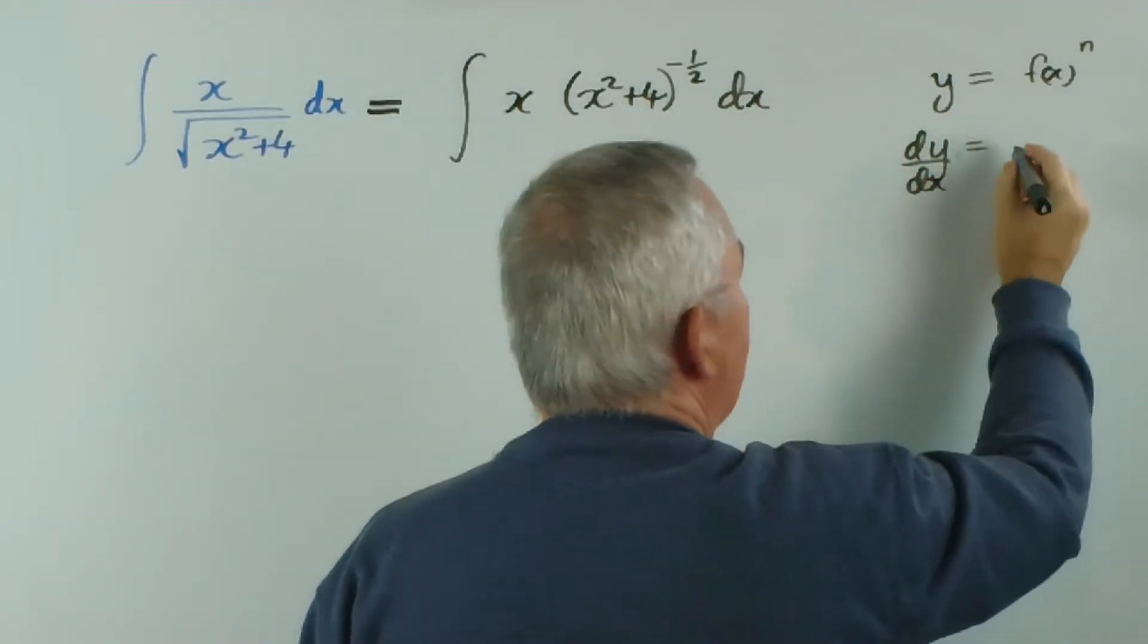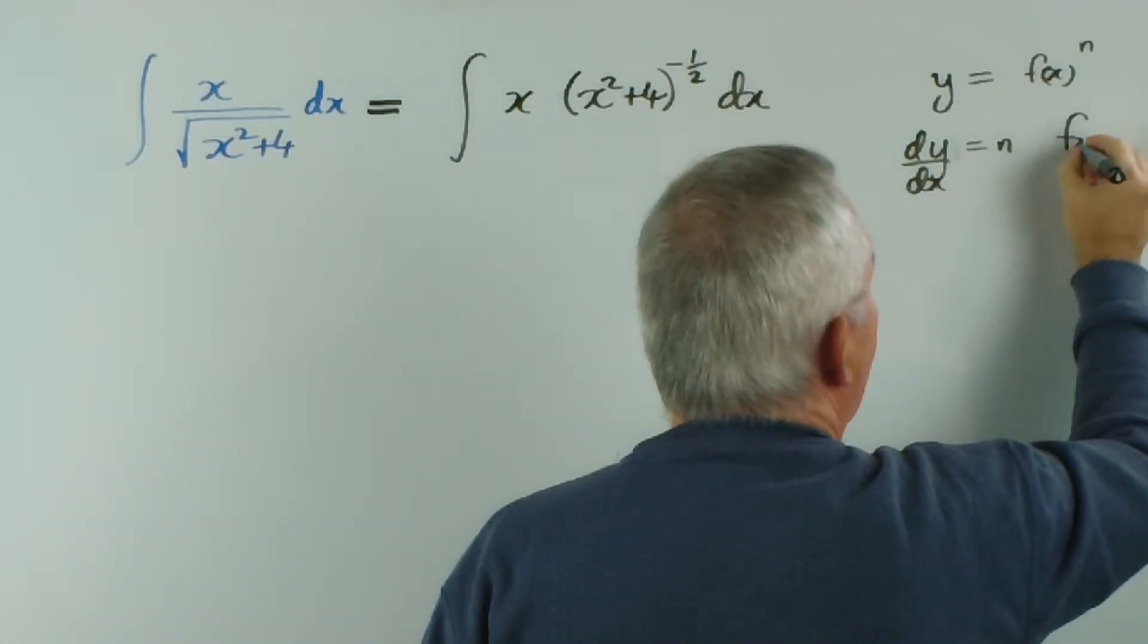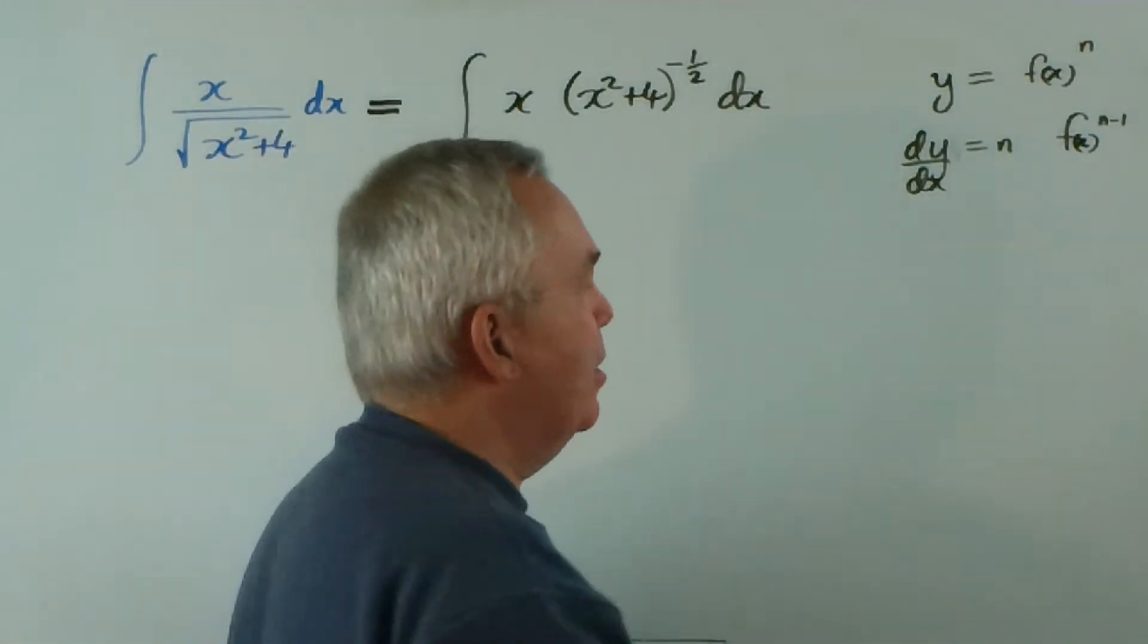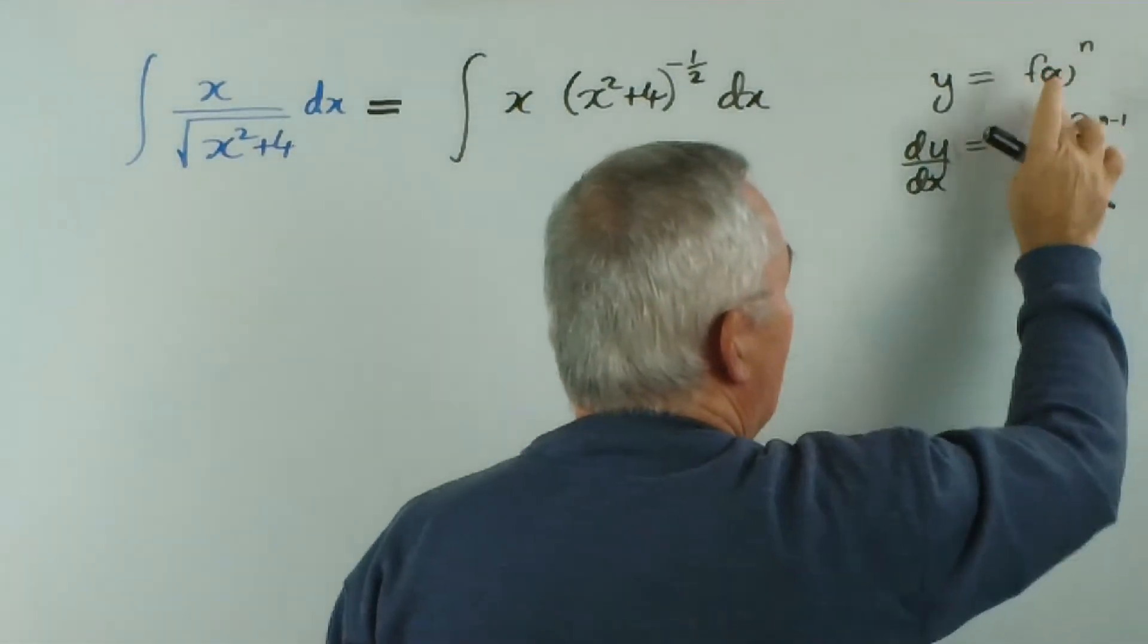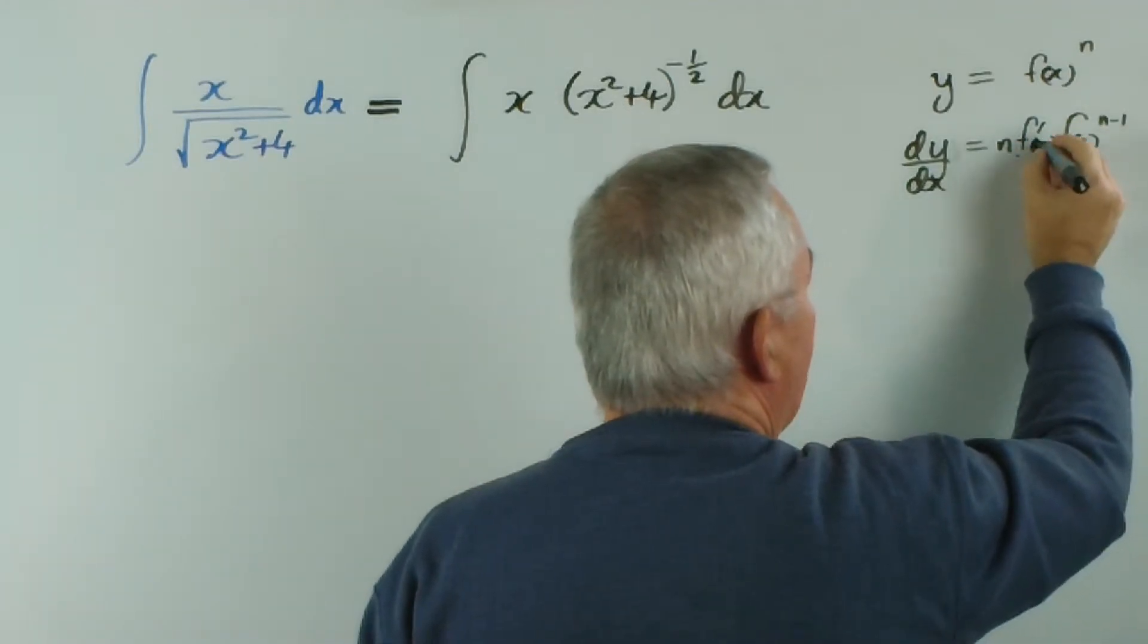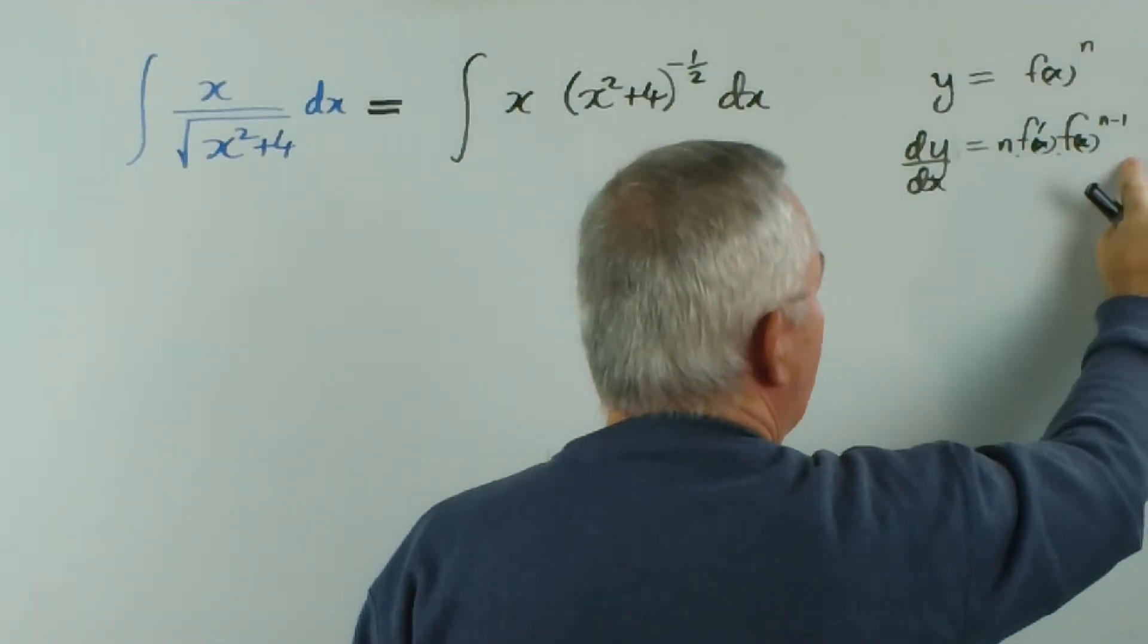And now we multiply by the derivative of the function itself using the chain rule. And this is the pattern we look for in our integral.